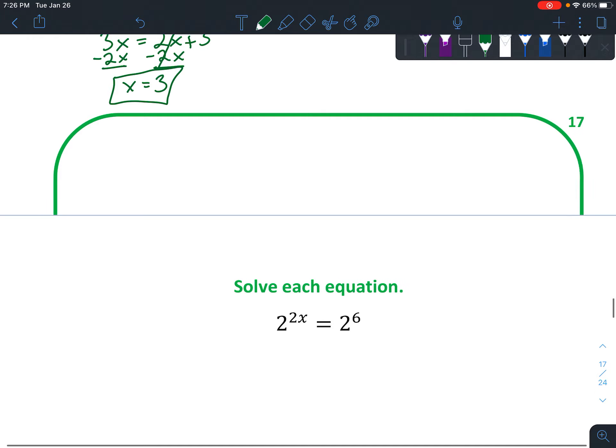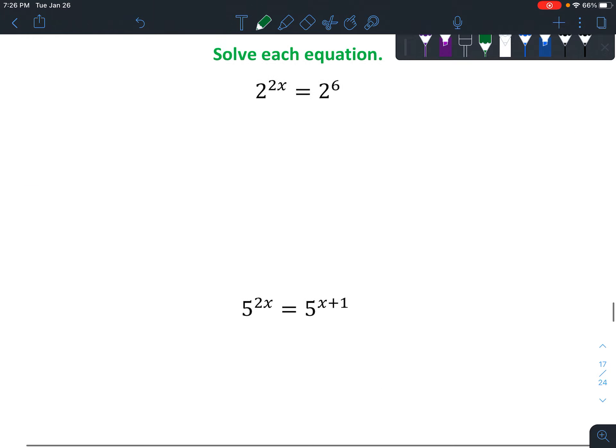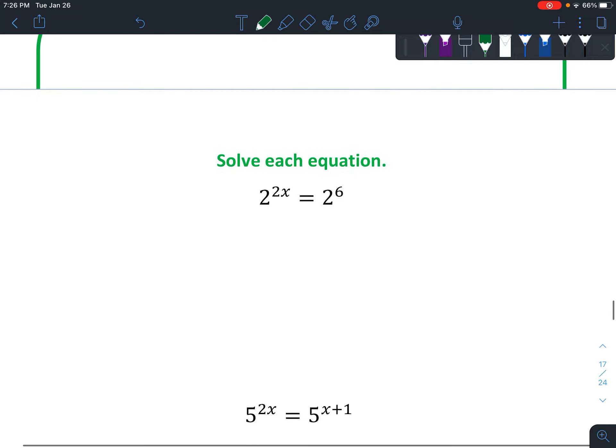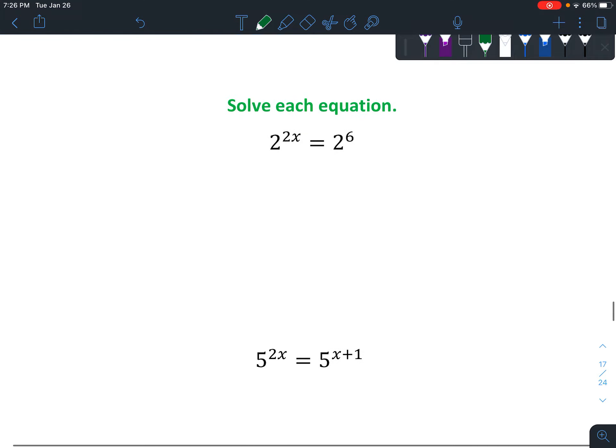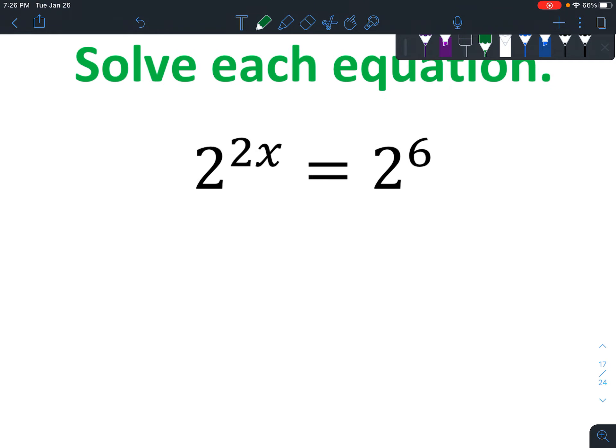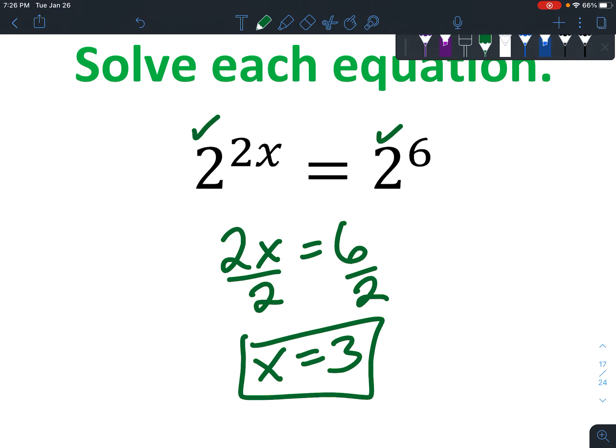Okay, let's look at a few more examples. So we've got 2^(2x) = 2^6, and so, check, same base, right? So exponents have to equal each other. Divided by 2, X = 3.